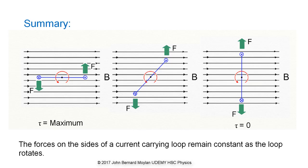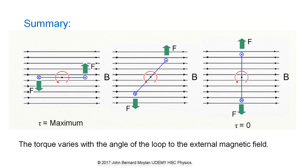The forces acting on the sides of the current carrying loop remain constant as the loop rotates. However, the torque generated by these forces changes as the angle between the force direction and the plane of the loop changes, so that torque is at a maximum value when the loop is parallel to the magnetic field and is zero when the loop is at 90 degrees to the magnetic field.